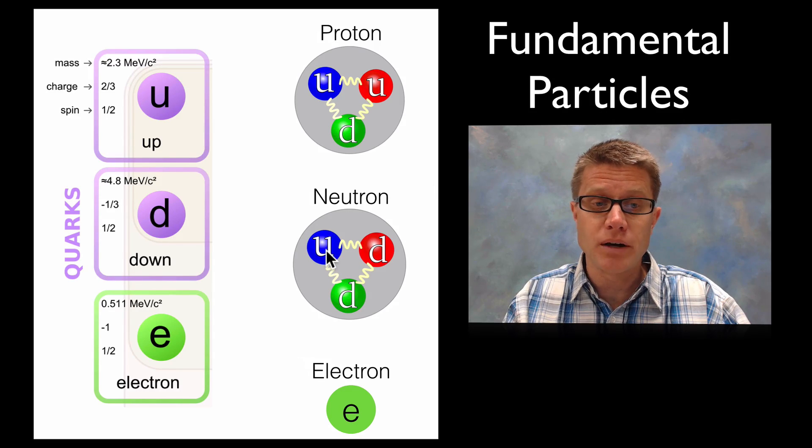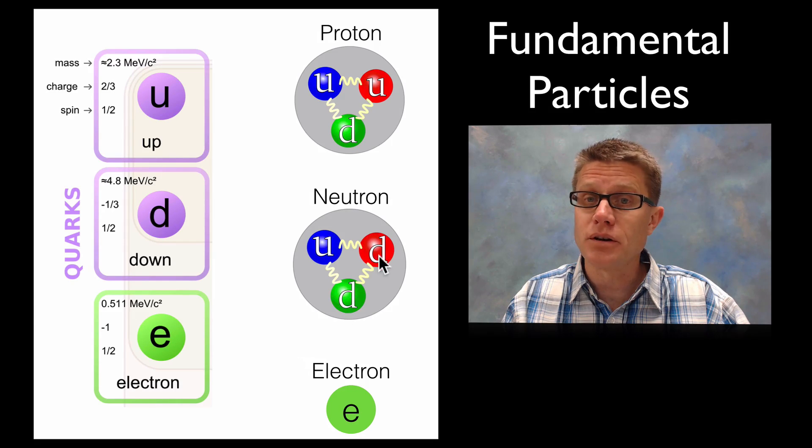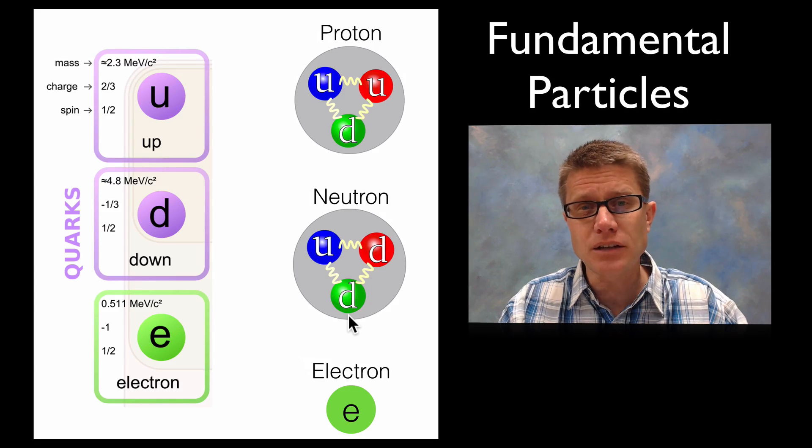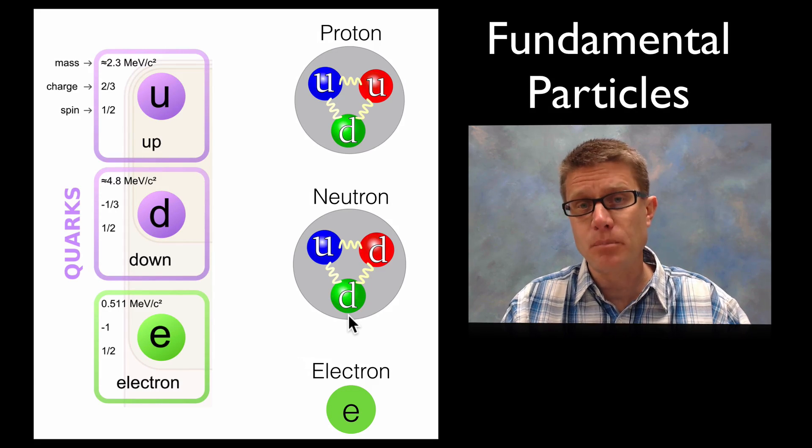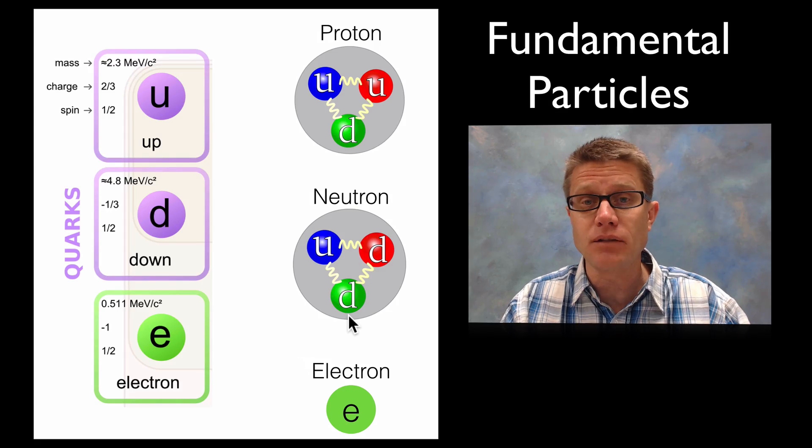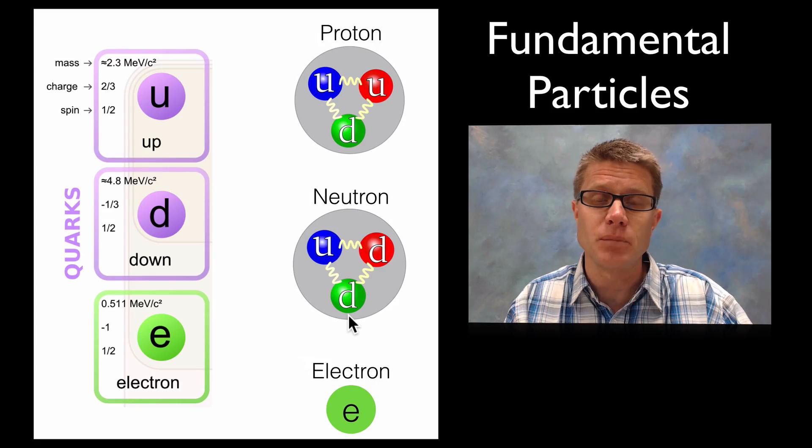Likewise with a neutron we have got one up, which is two thirds positive charge minus two one third charges for the two down quarks. And so a neutron is going to have no charge. And so if you are trying to ask a question about the behavior of protons and neutrons at this really, really tiny level, we have to understand what they are made up of. We have to understand these fundamental particles.